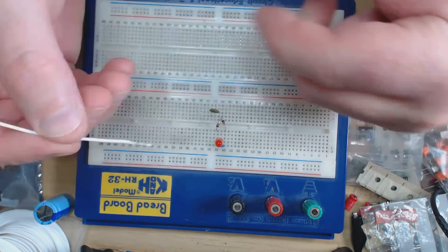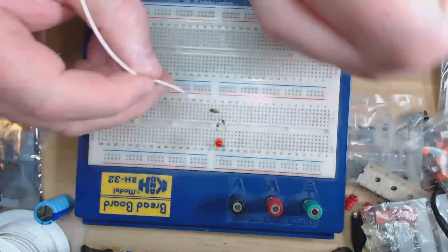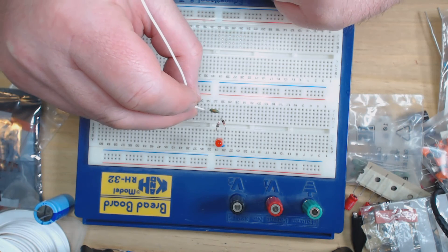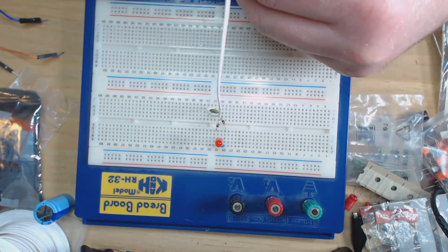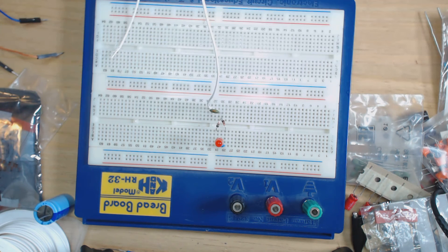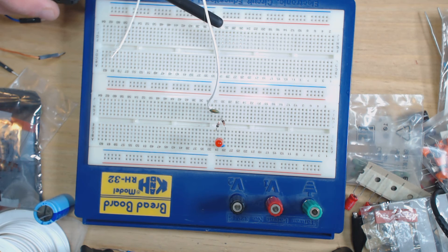And what we're going to do is we're going to take, I've just got a piece of wire, it doesn't really make much difference, and I'm going to put that in the same row as our capacitor. Now I've got an RF source here which is a little two-way radio.